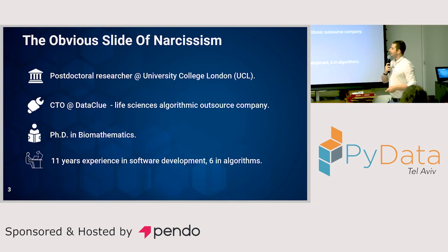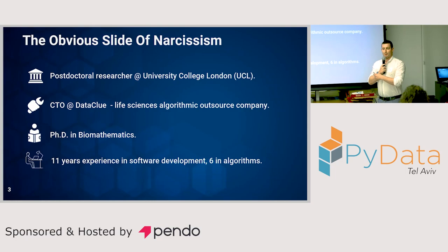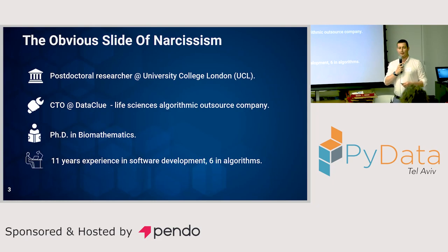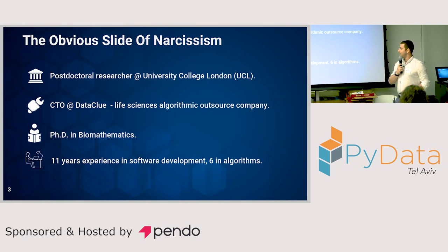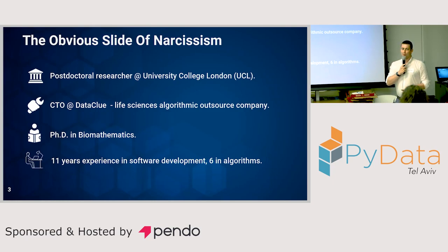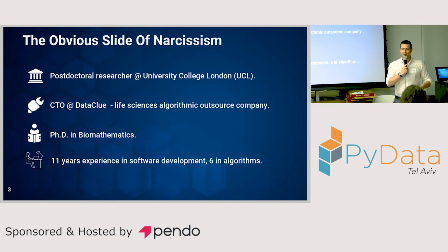The obvious slide of narcissism. My previous presenters didn't have one and I'm really disappointed. Postdoctoral at NewCL, CTO at Dataclue — we are doing cool life science algorithm development, so if you need one, we're fully booked for a few months. PhD in Biomathematics — it's like mathematics, but with cancer — and doing too much coding recently, like 10 years' time.